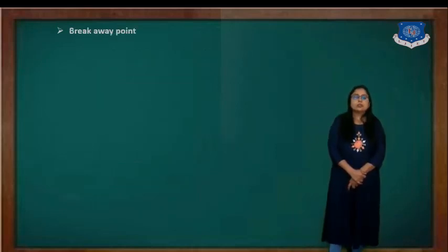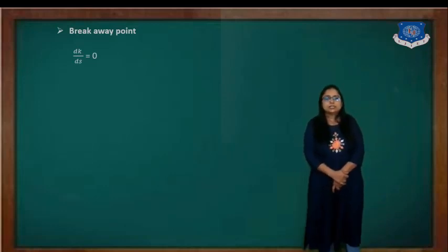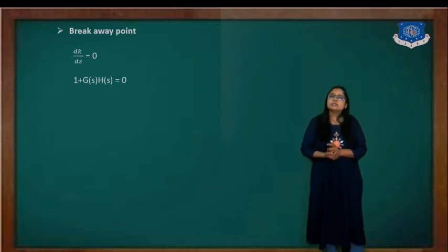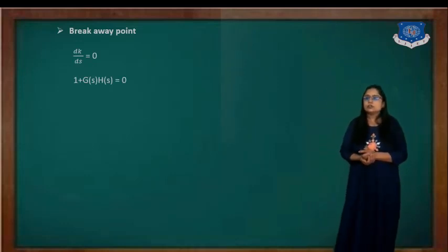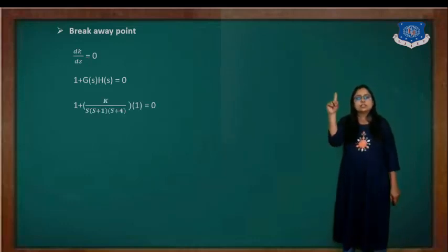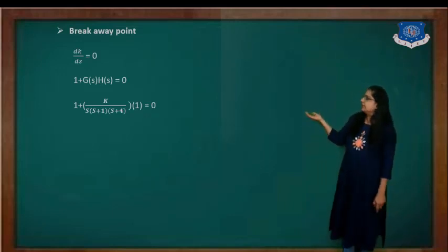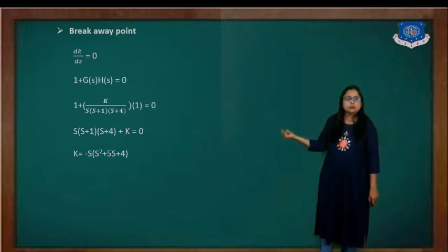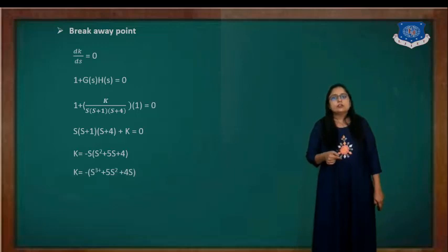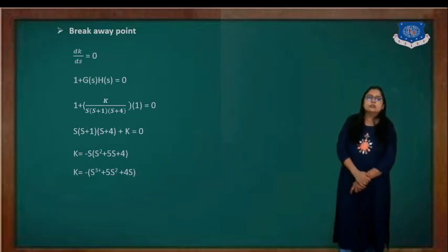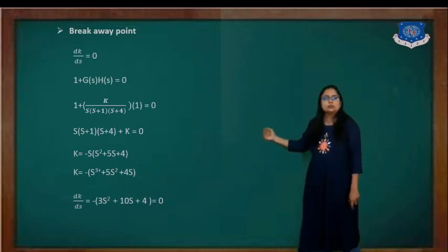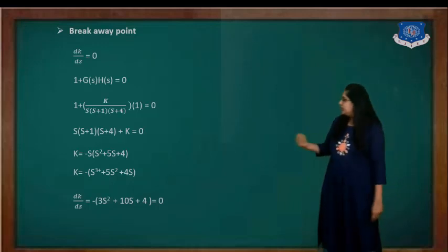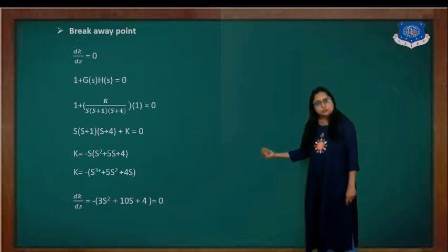Now the breakaway point. For that the equation is DK/DS equal to 0. We require the characteristic equation: 1 plus G(S)H(S) equal to 0. Substituting G(S) with H(S) equal to 1 for unity feedback, taking the LCM, we find K equals minus S(S+1)(S+4) which gives S squared plus 5S plus 4. Multiplying by S gives S cubed plus 5S squared plus 4S. Now differentiating: 3S squared plus 10S plus 4 equal to 0.